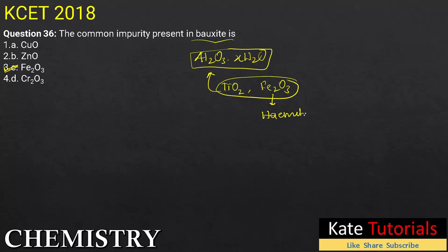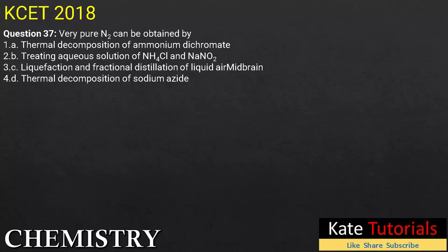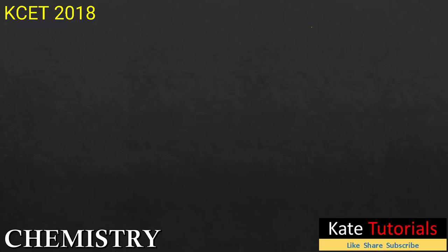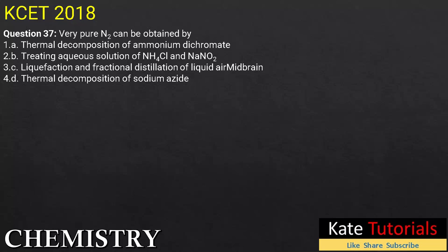Coming to question number 37: very pure nitrogen gas N₂ can be obtained by which method? They have given options A, B, C, D, and we have to identify where we get pure nitrogen gas. Let us discuss option A: thermal decomposition of ammonium dichromate. Ammonium dichromate — you know potassium dichromate is K₂Cr₂O₇ — similarly ammonium dichromate is (NH₄)₂Cr₂O₇.